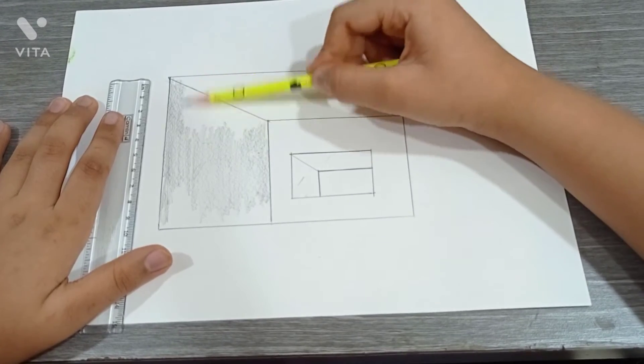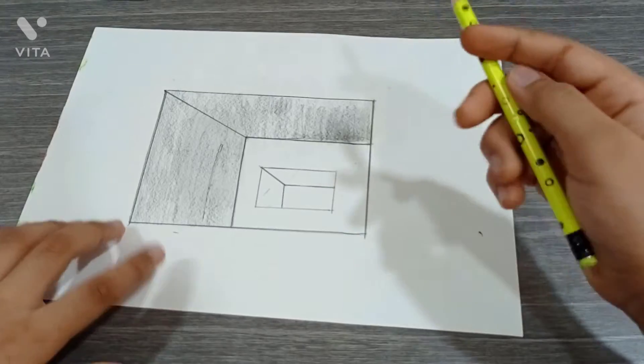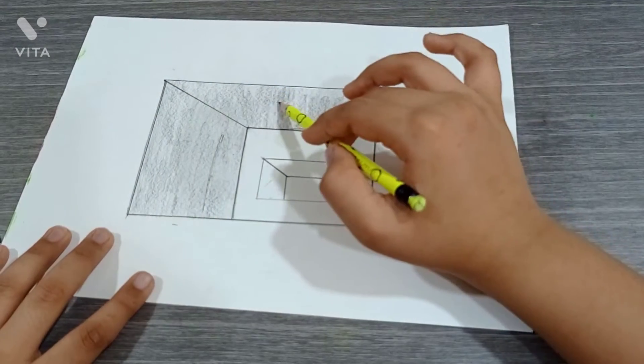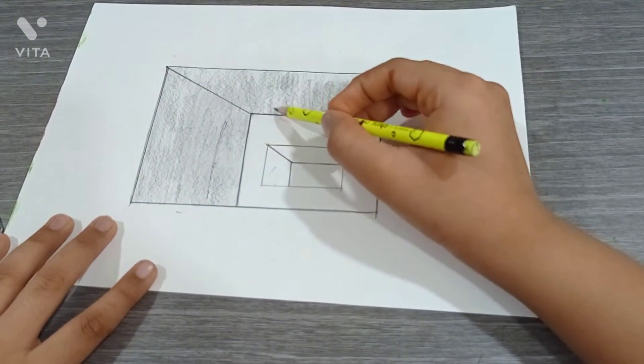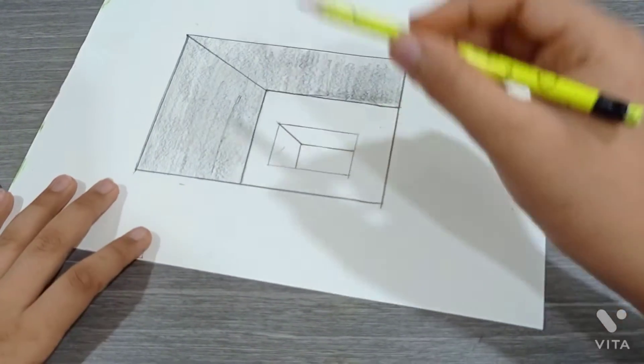As you can see, I'm doing it. We are done with this portion shading. After shading this and this portion, darken all these lines. Now we'll shade this one portion.